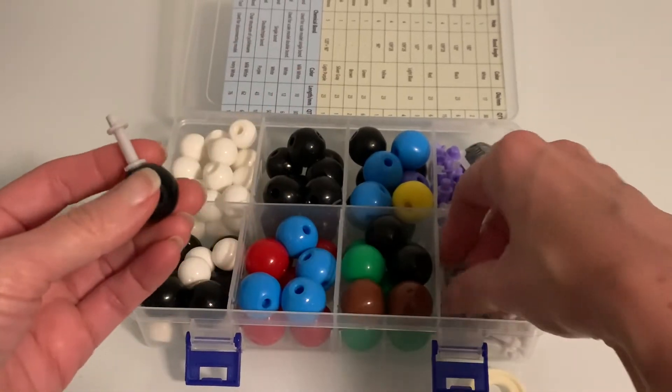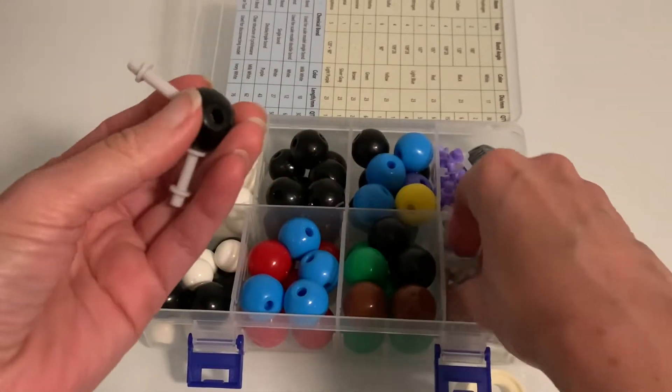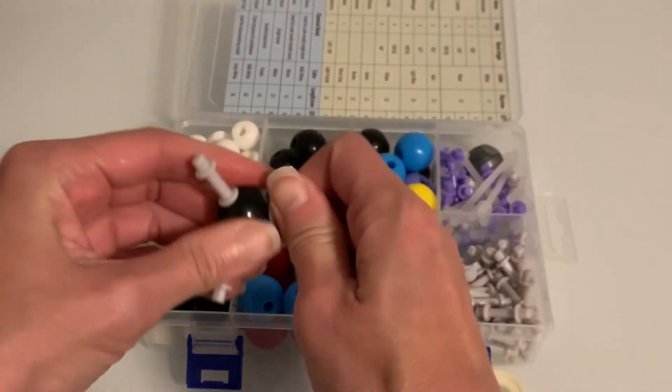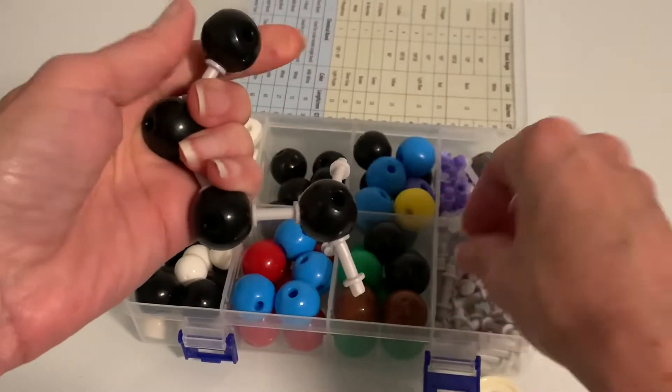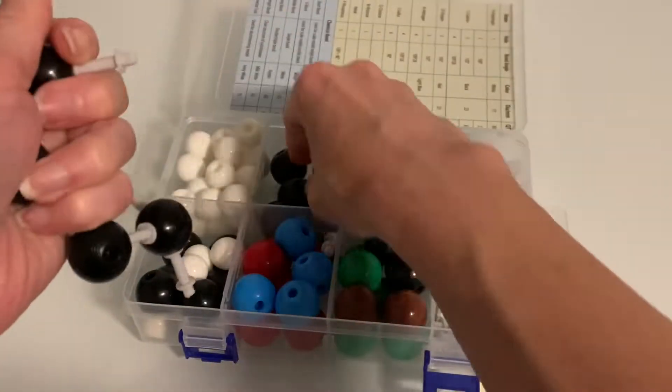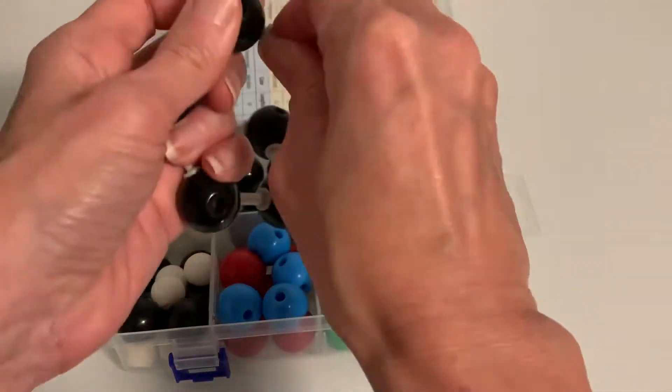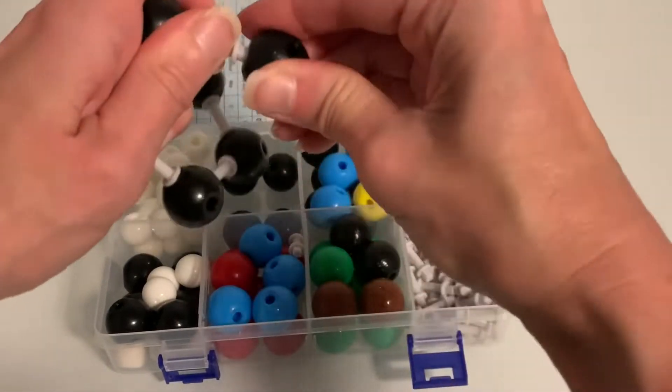The first thing that I noticed about the Linktour set is that the bonds fit really easily into the atoms. This is not necessarily a good thing. As I was building the models, I noticed that my molecules were a little bit floppy and some of them actually fell apart as I was building them, which is not going to be good for students in organic chemistry.